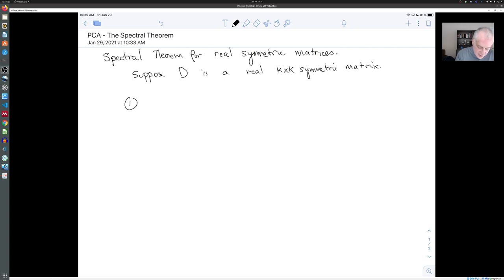Then first of all, we know that all of the eigenvalues of D are real. If you take a general matrix, even with real entries, to find its eigenvalues you look at its characteristic polynomial, which is a degree k polynomial. Typically some of the eigenvalues of that matrix are complex numbers, but not if D is symmetric. If D is symmetric, it forces all the eigenvalues to be real.